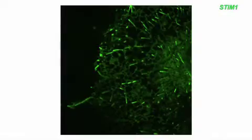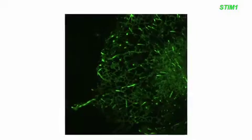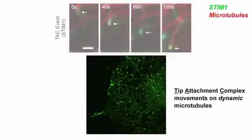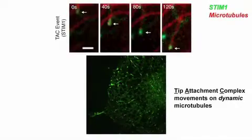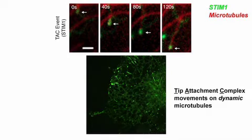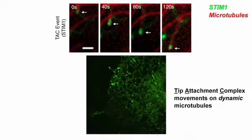ER movements involve the microtubule motor proteins kinesin-1 and dynein, and are classified into two distinct types. In some cases, tubule ends — marked here by the ER protein STIM-1 — attach to the tips of dynamic microtubules as they grow and shrink, a mechanism called tip attachment complex or TAC dynamics.